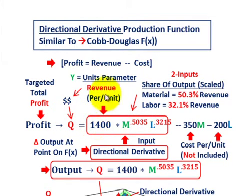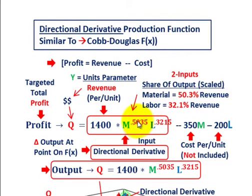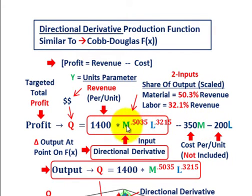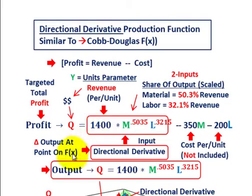Looking at our revenue section, on a per unit basis we'd be selling a product for $1,400, and you take that times some material input and some labor input raised to exponential amounts. For material, I'm looking at about 50% of the revenue — that's material raised to 0.5035. And for labor, about 32% of the revenue, raised to an exponent of 0.3215. We're not going to deal with cost here — all we're looking at is the revenue part to determine the directional derivative. We have two inputs and we have to determine the output.